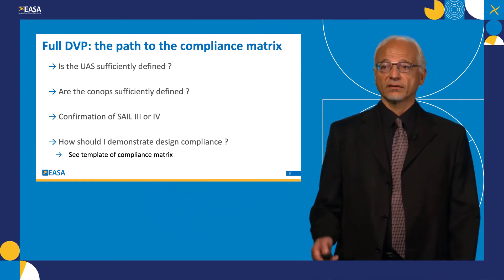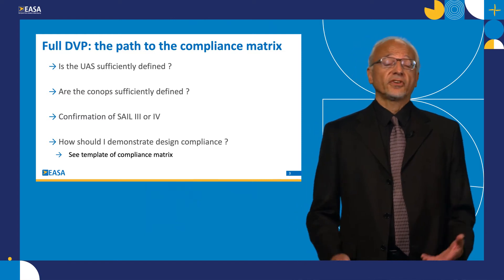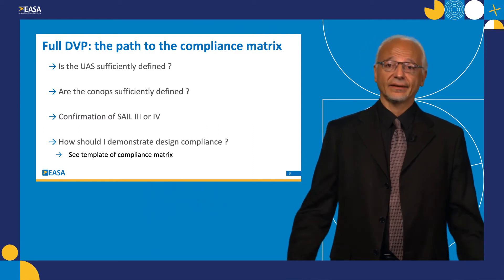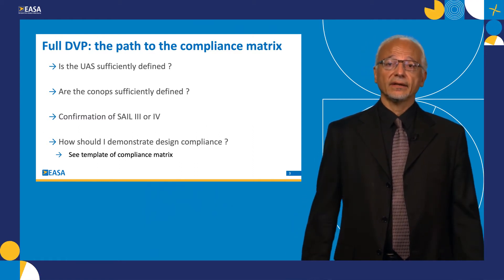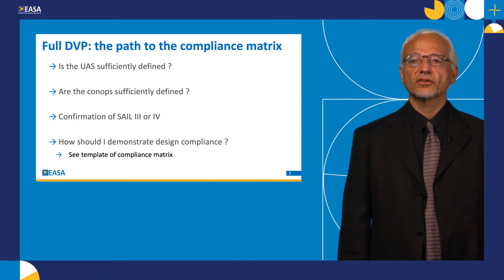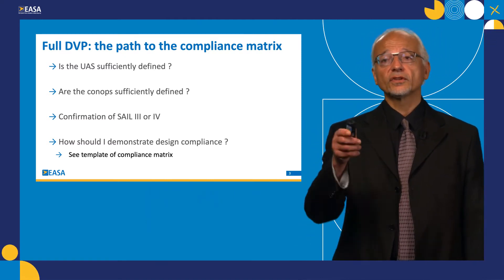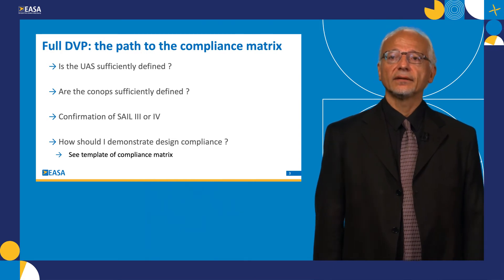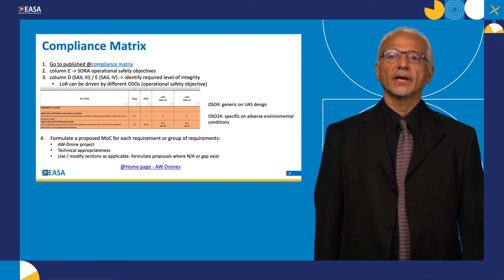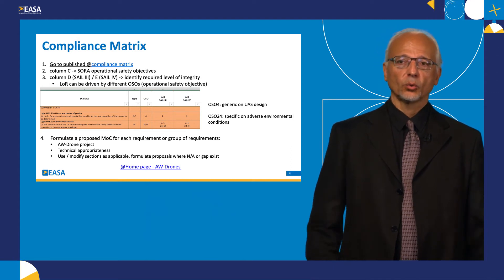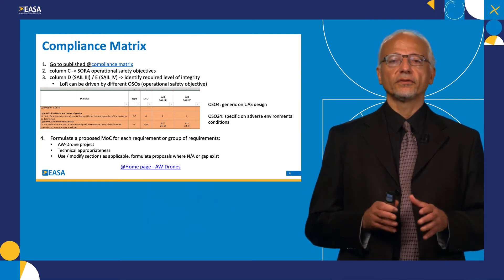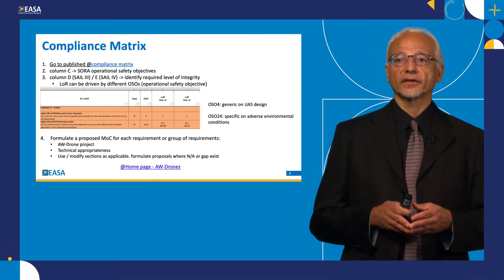So how to substantiate these requirements? First of all, the UAS has to be sufficiently defined — not only for those aspects like dimensions, cruise speed, and kinetic energy, which are absolutely necessary to carry out the risk assessment. To define the means of compliance for Special Condition Light UAS, use the hyperlink shown on this slide. You will find a table defined for SAIL 3 and SAIL 4, and for each requirement of SC Light UAS, this table shows at which level of integrity — low, medium, or high — you will have to define the means of compliance.